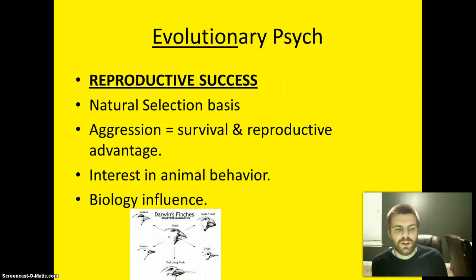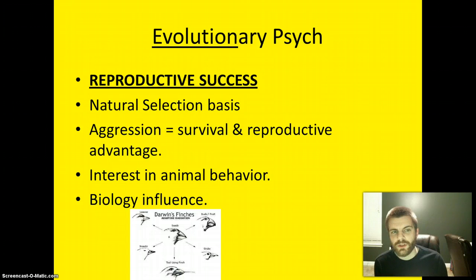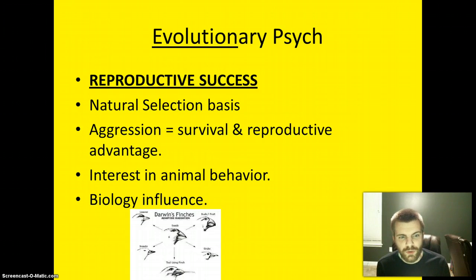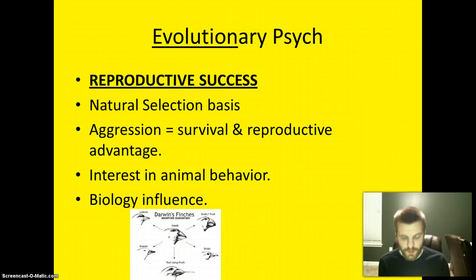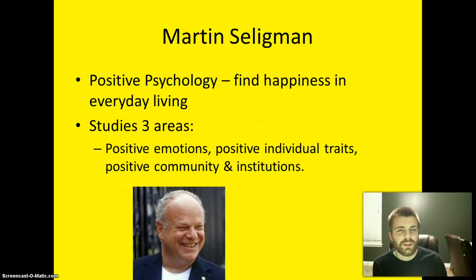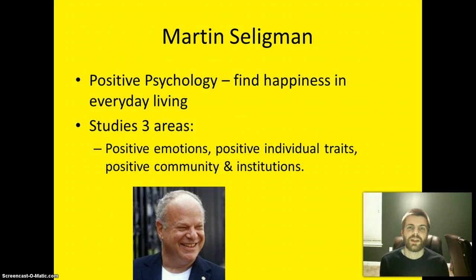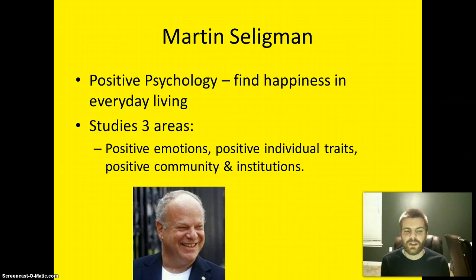The final two areas are evolutionary psychology and positive psychology. Evolutionary psychology deals with its root word evolution, focusing on reproductive success and anything that makes a species more likely to reproduce, with heavy influence from Darwin's natural selection, biology, and dominance. Finally, Martin Seligman is the creator of positive psychology, which takes psychology away from focusing on negative things and instead focuses on how psychology can benefit people — focusing on happiness in life and letting psychology evolve from there. Thanks for joining, and I'll see you next time.